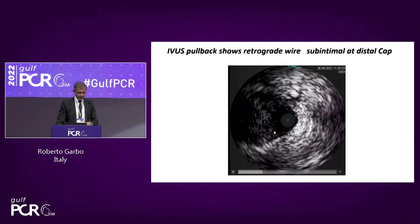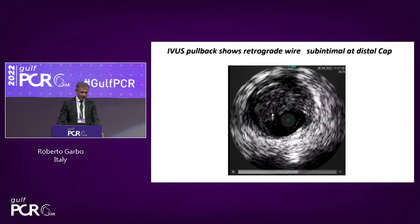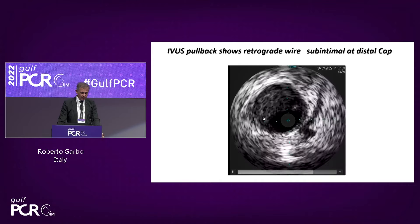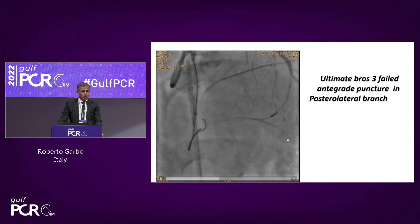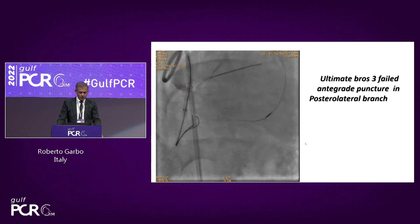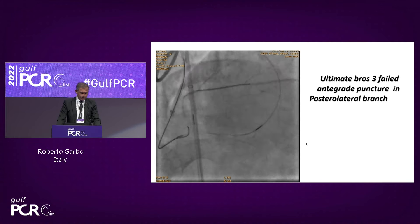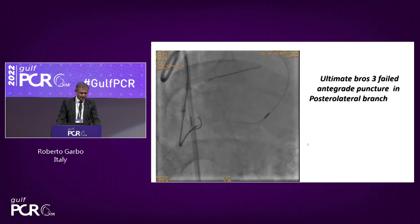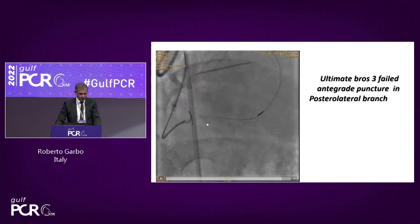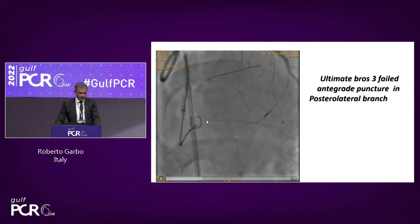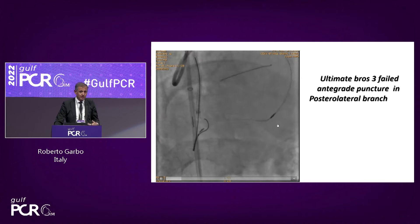We can see on the IVUS we are sub-intimal, and the hematoma is small because we did not inject. After externalization, I took a dual-lumen from antegrade — this is the only injection I did, a very small injection on the left system to understand the anatomy at the crux. The SWO 3 helped me understand where to puncture without increasing contrast injection. But I failed to penetrate with the Ultimate Bros, so I changed strategy.